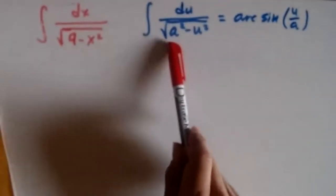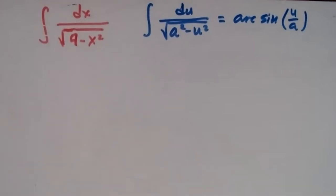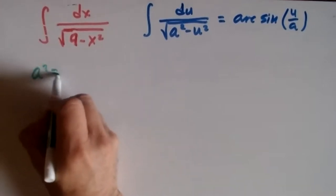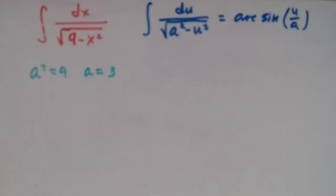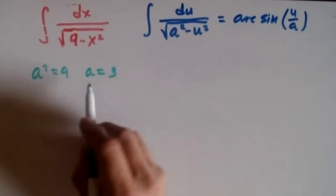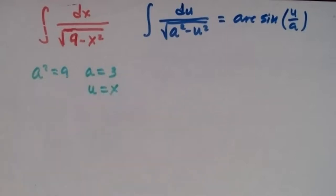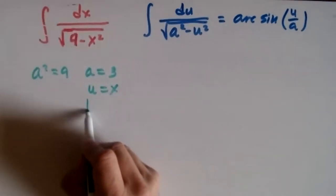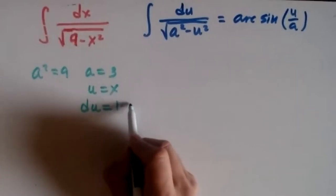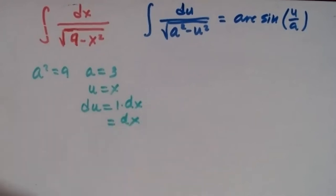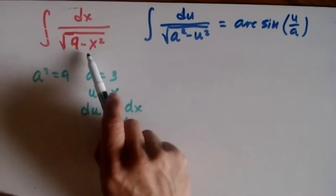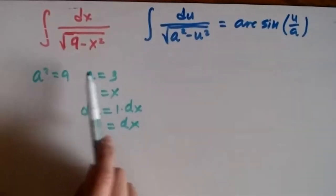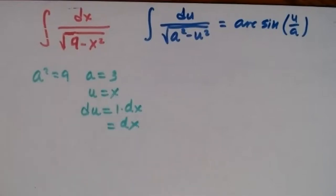Matching term by term: a squared equals 9, so a equals 3. Then u equals x, and by u-substitution du equals the derivative of x times dx, which is just dx. So a equals 3, u equals x, and du equals dx — a very simple match.